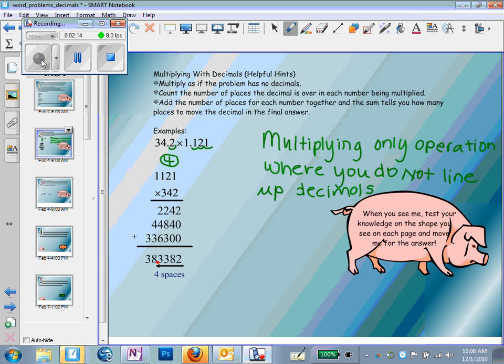So you multiply the problem as if it has no decimals, count the number of places the decimals are over. One place in one point one two one, the decimals are over three places. So that's a total of four spaces that the decimals move over in the two numbers.